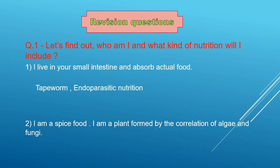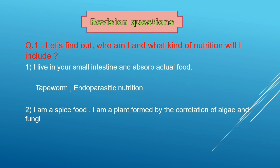Second is I am a spice food. I am a plant formed by correlation of algae and fungi. Would you get that? Yes. It is lichen. And the type of nutrition is Symbiotic nutrition. In which two different types of plants live together to form their needs of nutrition.